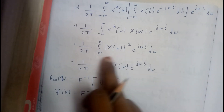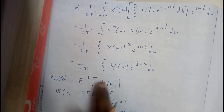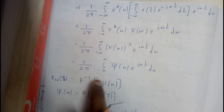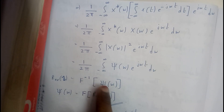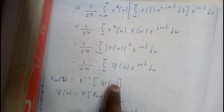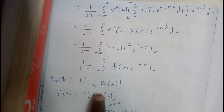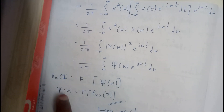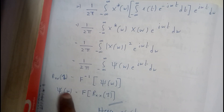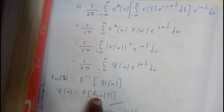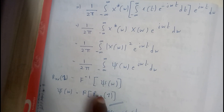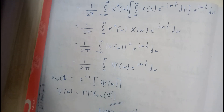So this whole part — what is it? It is nothing but Rxx of Z equals the inverse Fourier transform of Psi of omega. So from this we can say, taking the Fourier transform to the other side: Psi of omega is equal to the Fourier transform of Rxx of Z. I hope everyone got a small idea on this.